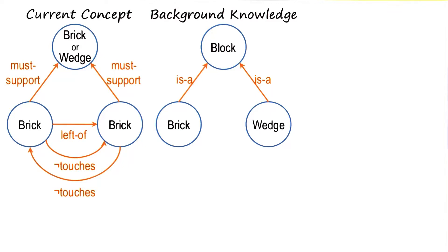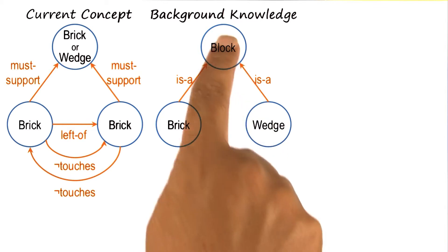Now, let us suppose that the AI programmer had background knowledge which said that brick is a kind of block, and wedge is a kind of block as well.